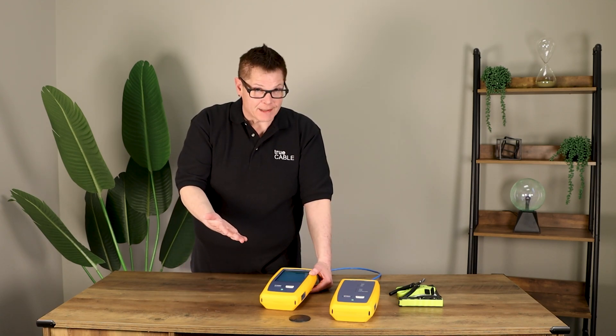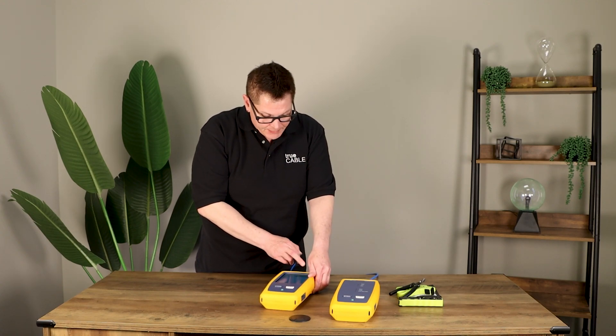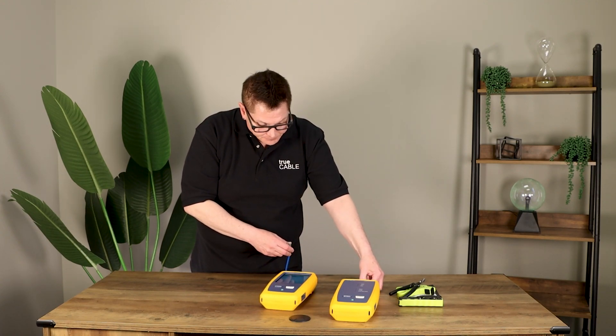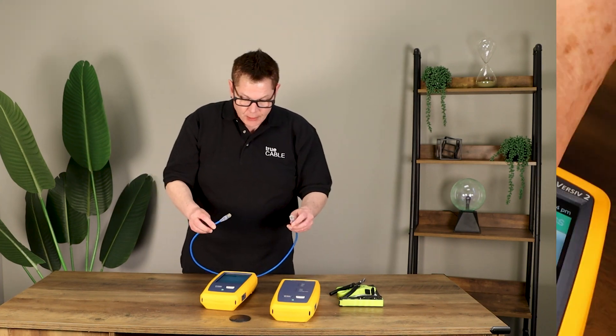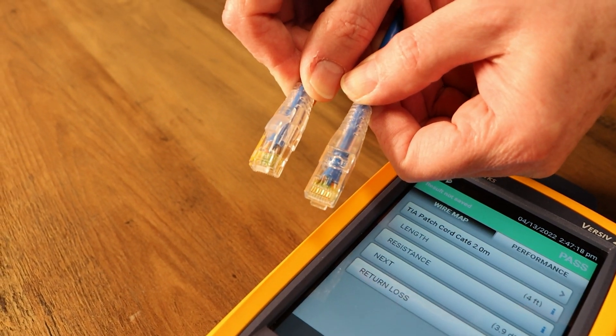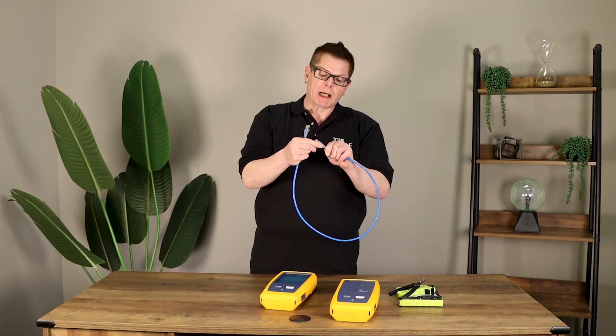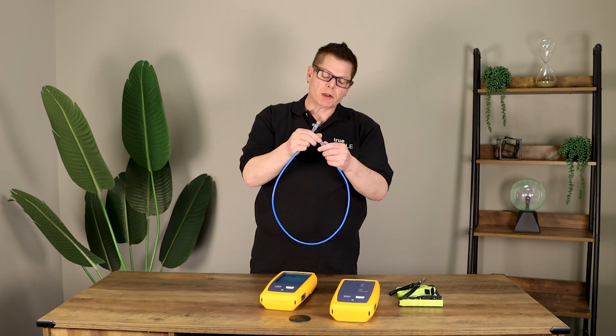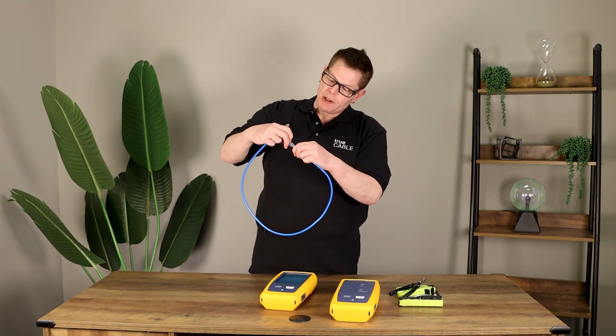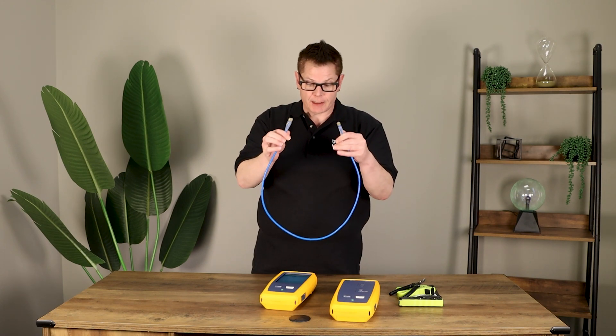We got a full pass! Yeah! So why did we get a full pass? Well, number one, I was being really careful with my terminations. I was using the all-important cable boot to help stabilize the connection, and the load bar plugs are going to give you a much better opportunity to get the cable jacket as far up into the plug as you can, which helps reduce the crosstalk at the connector.